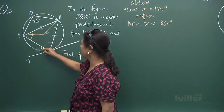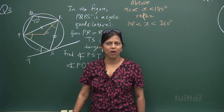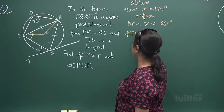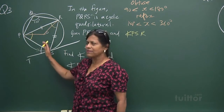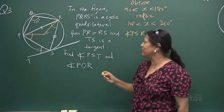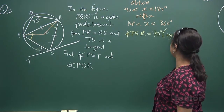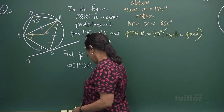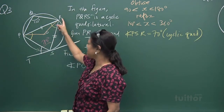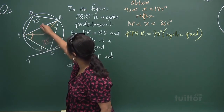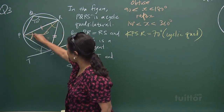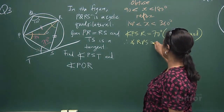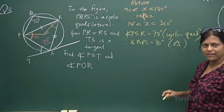We have a cyclic chord, so angle PSR equals 70 degrees — reason: cyclic chord. Now these two sides are equal (PR = RS), so the base angles of the isosceles triangle are equal. Therefore angle RPS is also 70 degrees — reason: base angles of an isosceles triangle.